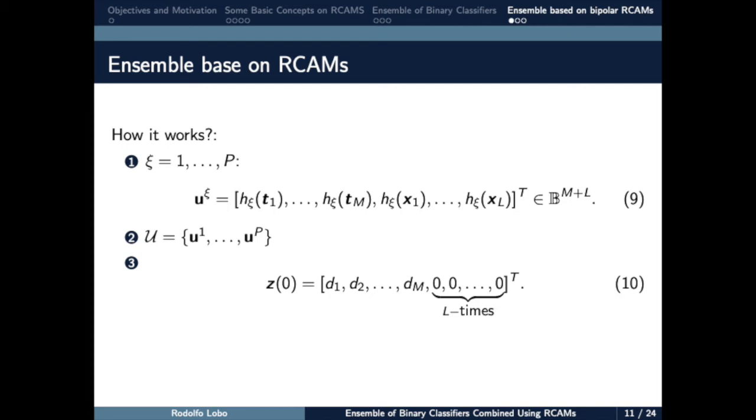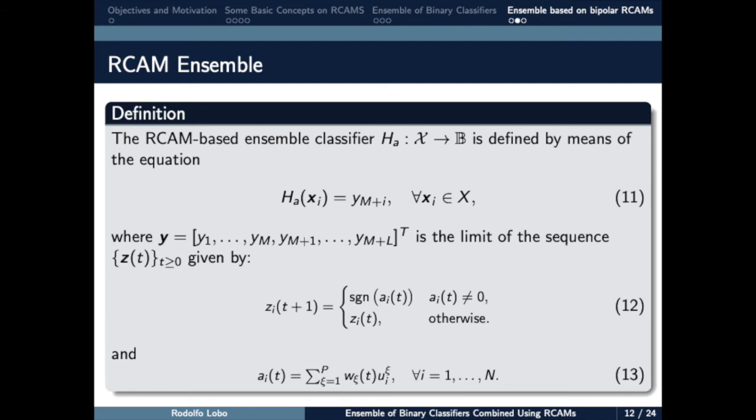Initial state Z0 is presented as an input to the associative memory, and the last L components of the recall vector Y yield the class label of the batch of input samples in the X set. Formally, it is given by equation 11, where Y is the limit of the sequence generated by the evolution equation 12 and the activation function 13.